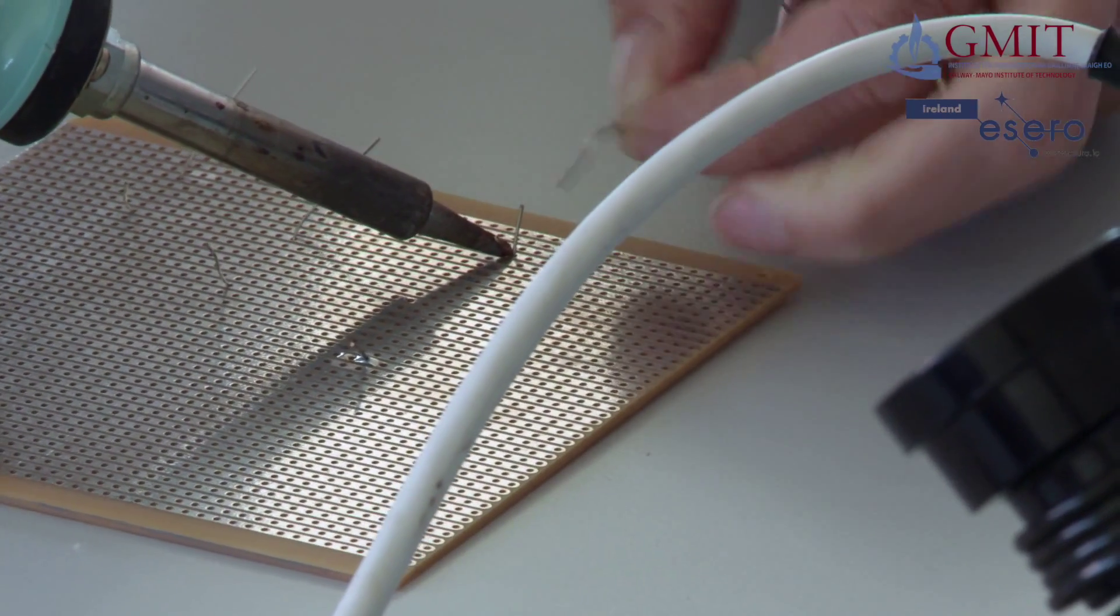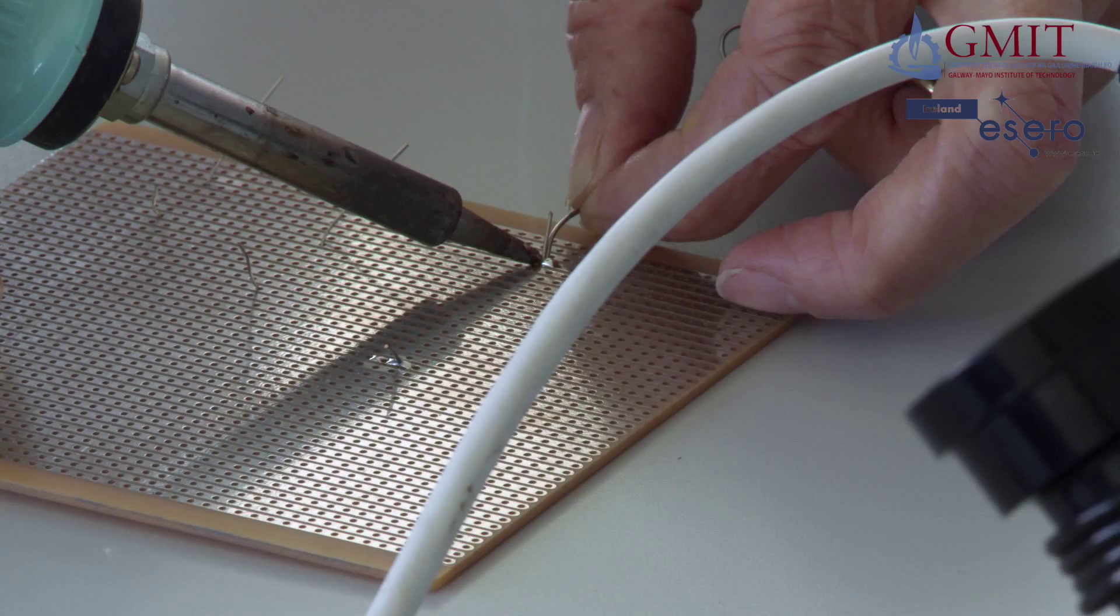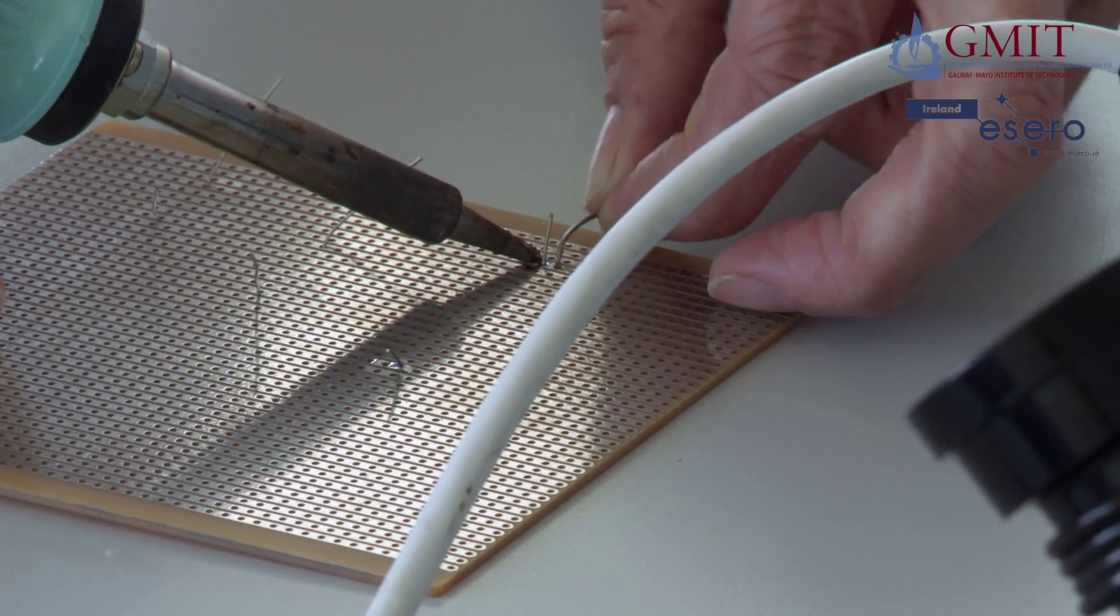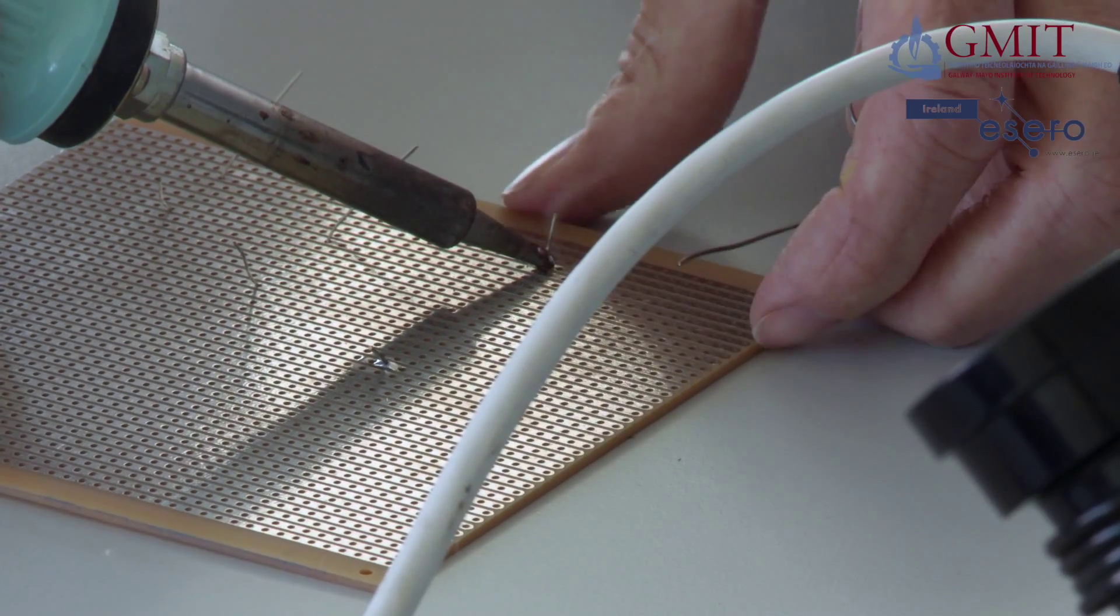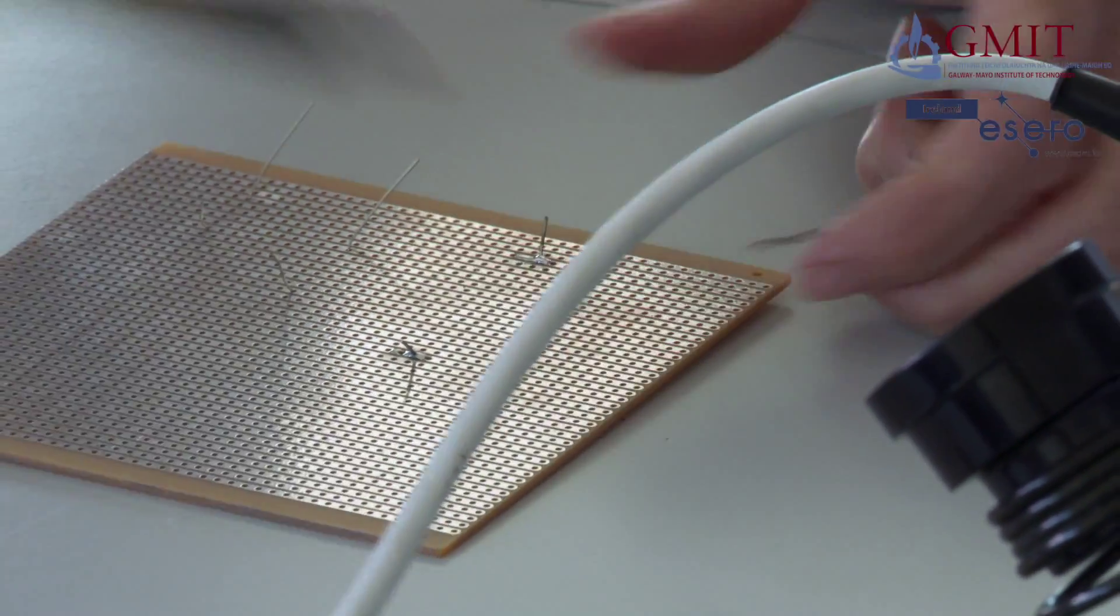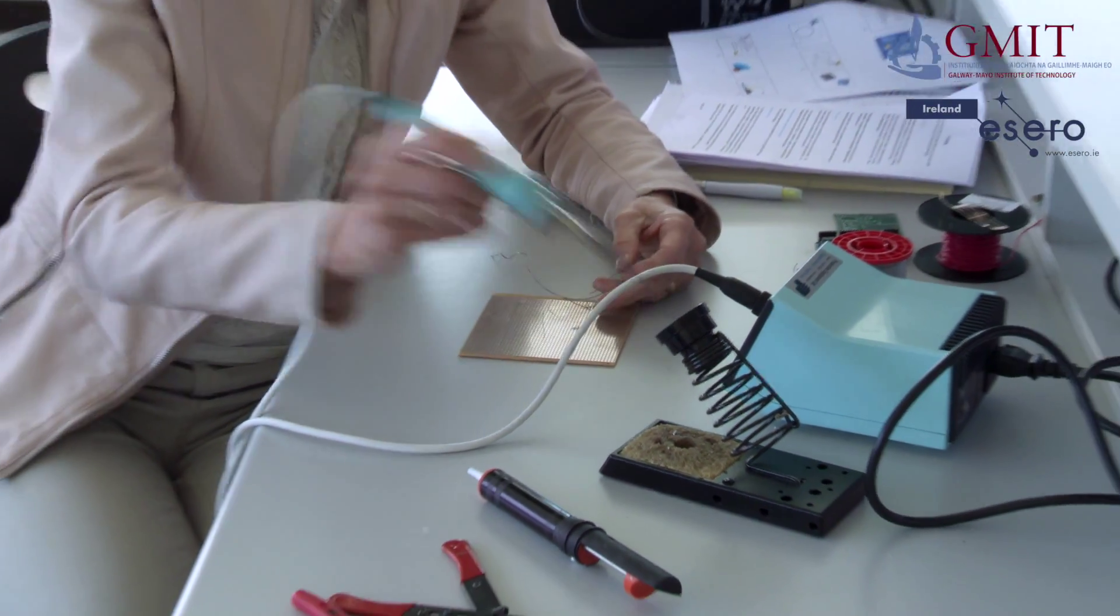Do another one here. So again, heat it up first. Then bring in the solder. Wait until it flows and you get that nice shape. And then clean the iron intermittently. And I'll do another one or two here.